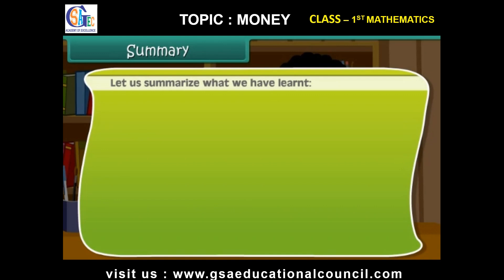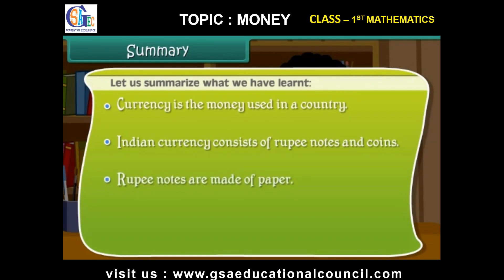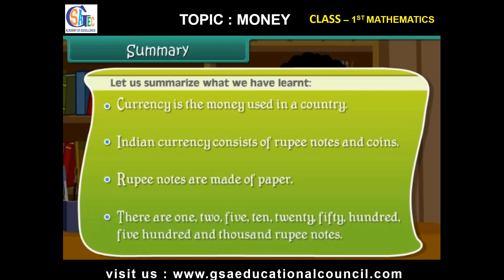Let us summarize what we have learned. Currency is the money used in a country. Indian currency consists of rupee notes and coins. Rupee notes are made of paper. There are 1, 2, 5, 10, 20, 50, 100, 500 and 1000 rupee notes.